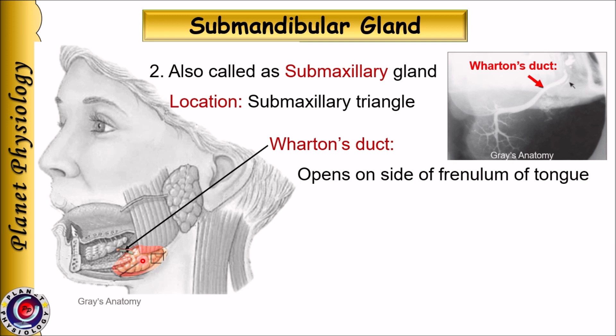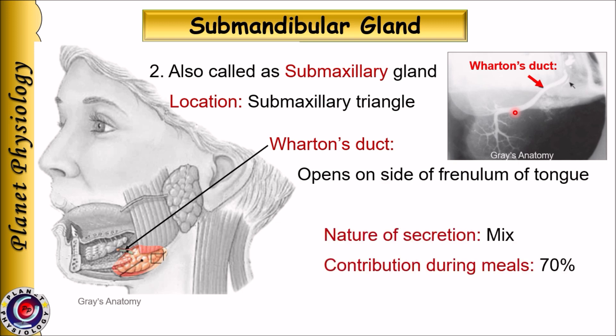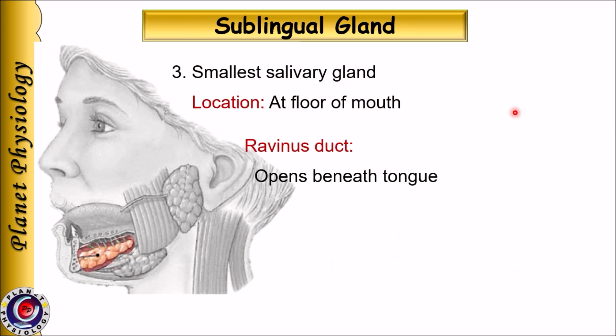The next important salivary gland is the submandibular gland, which is also called the submaxillary gland due to its location in the submaxillary triangle. It opens on the side of the frenulum of the tongue by means of Wharton's duct. This duct can be visualized on a submandibular sialogram. The secretion is mixed — that is, serous as well as mucous — and it contributes 70% of the salivary secretion during meals.